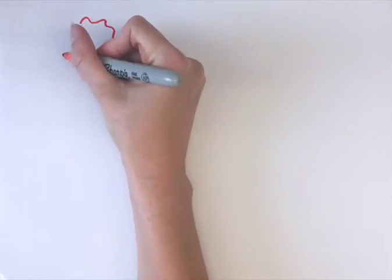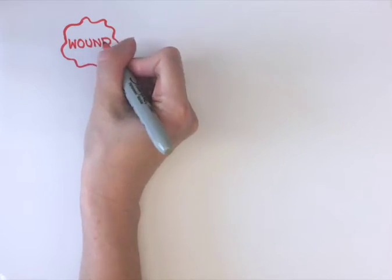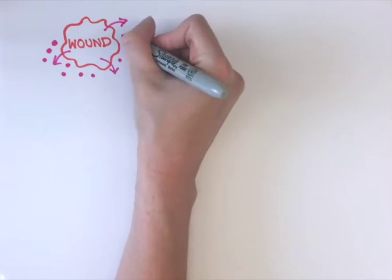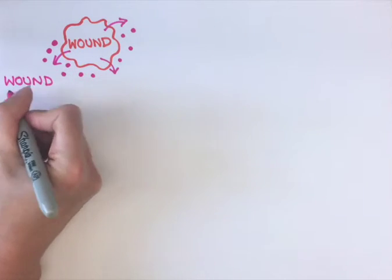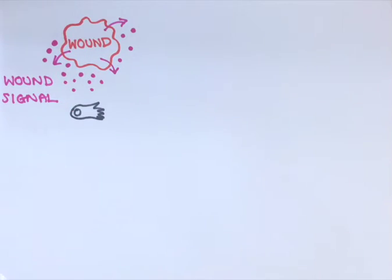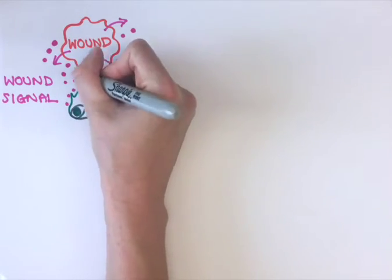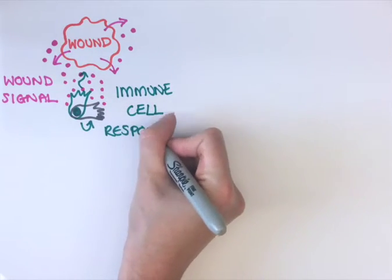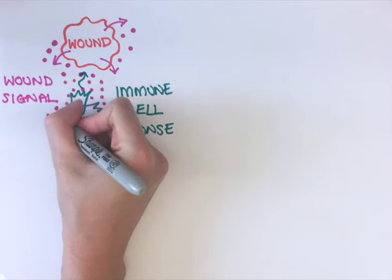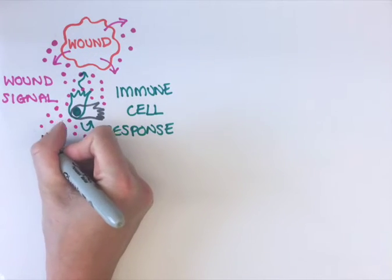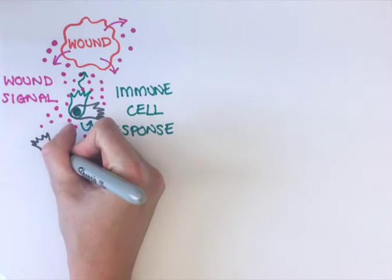When a wound is first made, it begins releasing an attractant signal which gradually spreads out away from the damaged area. Immune cells located closest to the wound will be the very first to sense this signal and respond by turning and moving towards the damage. As the signal spreads further out, it begins to reach immune cells that are located further away, and these then respond by turning and moving towards the wound.